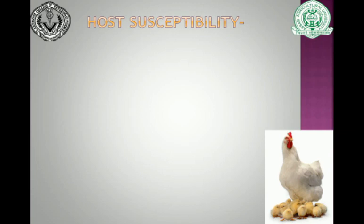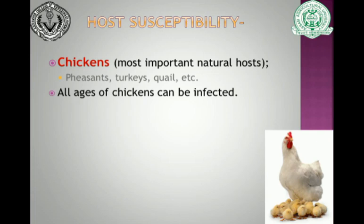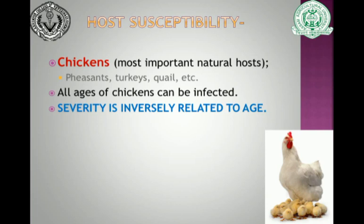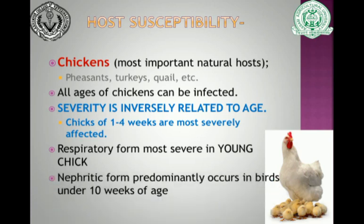Chickens are the most important natural hosts. Reports also indicate occurrence in birds like pheasants, turkeys, quails, etc. All ages of chickens can be infected; however, severity is inversely related to age — the younger the bird, the more susceptible it is. Chicks of 1 to 4 weeks are most severely affected. The respiratory form is most severe in young chicks, and the nephritic form is more predominant in birds under 10 weeks of age.